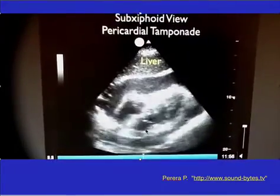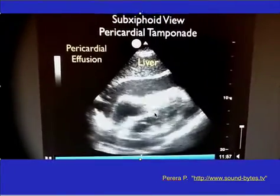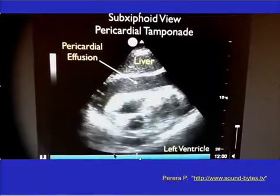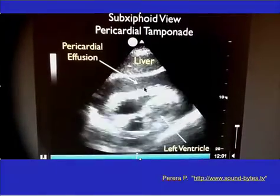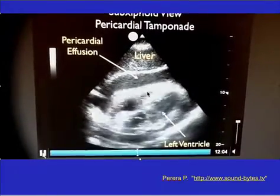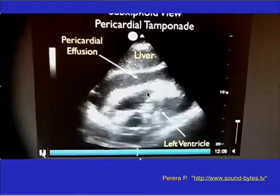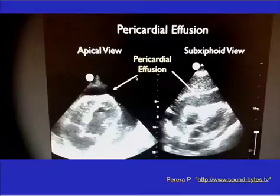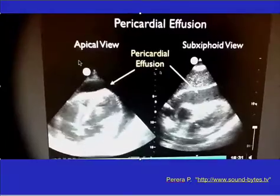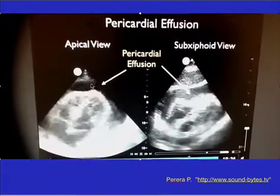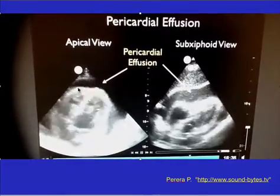Here it is in actual play. You can see the liver, the pericardial effusion, and the ventricle collapsing and sometimes opening up. This shows both an apical view and a subcostal view — you can see the pericardial effusion in both.